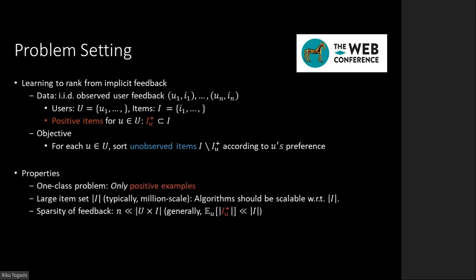There are three properties of Personalized Item Recommendation from Implicit Feedback. The first is the one-class problem: implicit feedback only provides positive examples. Second, the size of the item set is huge in real applications, and therefore scalability with respect to the number of items is required. Third, the number of user-item pairs observed as implicit feedback is quite small compared with that of all possible user-item pairs.